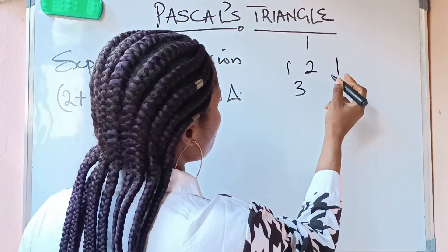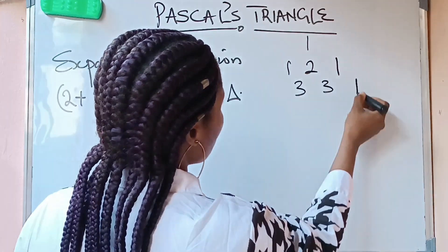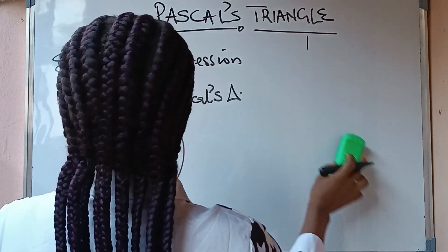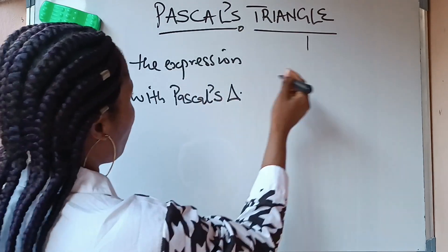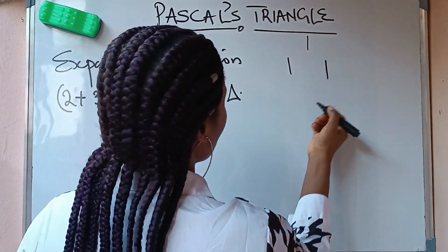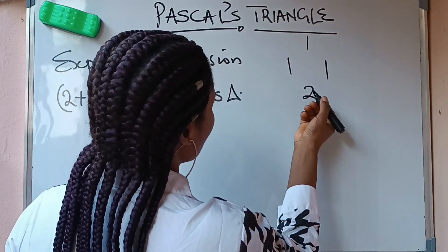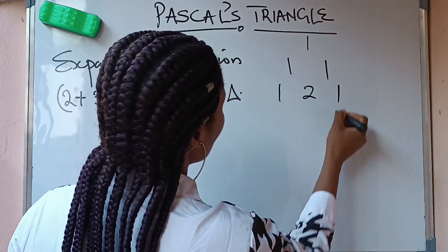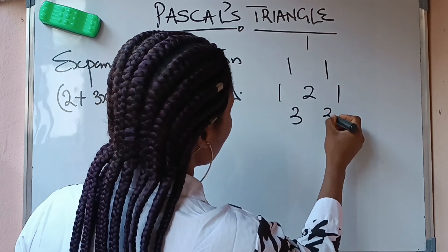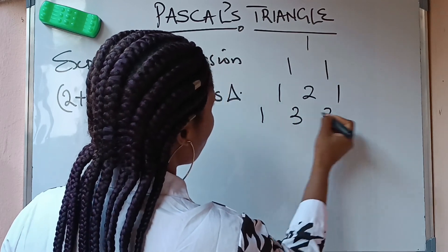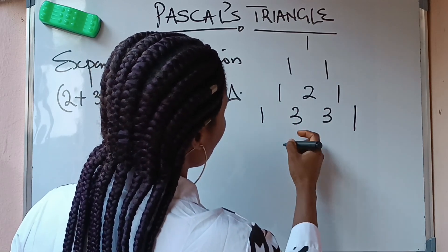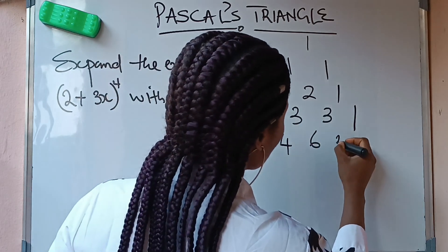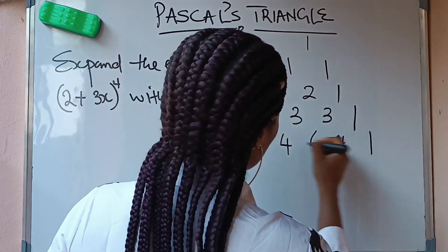You have 1, 1. Then 1 plus 1 gives you 2, so you have 1, 2, 1. Then 1 plus 2 gives you 3, 2 plus 1 gives you 3, so you have 1, 3, 3, 1. Then you have 1, 4, 6, 4, 1.